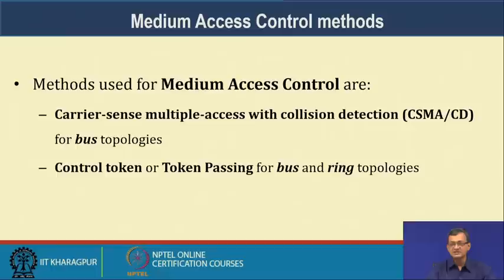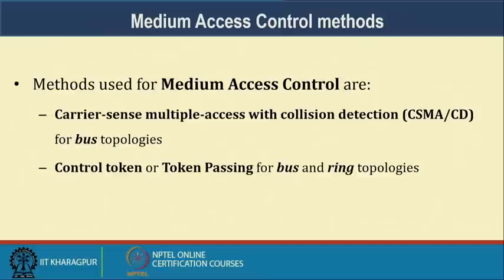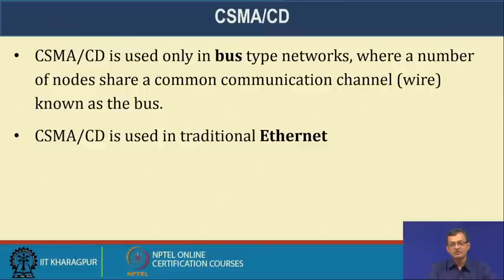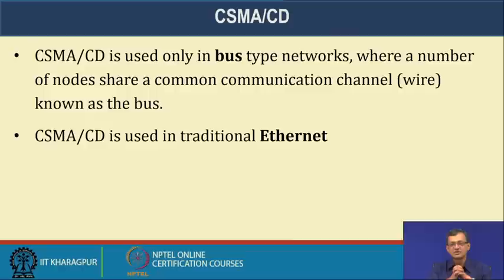Looking at medium access control methods, there are two predominant ones. One is CSMA/CD (Carrier Sense Multiple Access with Collision Detection) for bus topologies, which is what we mostly see today and is the technique used in traditional Ethernet. The other is control token or token passing for bus and ring topologies, which still exists but is not so popular these days.